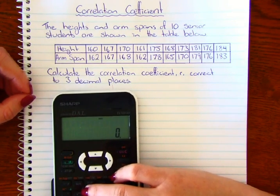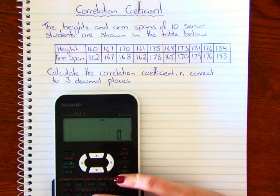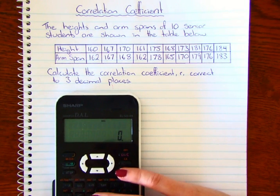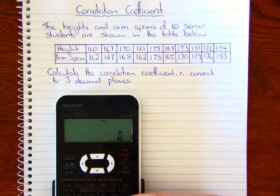Alright, so our question says the heights and arm spans of 10 senior students are shown in the table below, and it asks us to calculate the correlation coefficient correct to three decimal places.